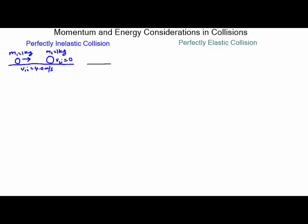The after situation would look like this: the two balls stick together and move as one object with a common final velocity. So I don't need V1f and V2f — I can simply call it Vf, and that's the velocity we want to determine. Let's first work through this, and then we'll talk about elastic collisions. In momentum and energy considerations, it's important to define the system correctly.